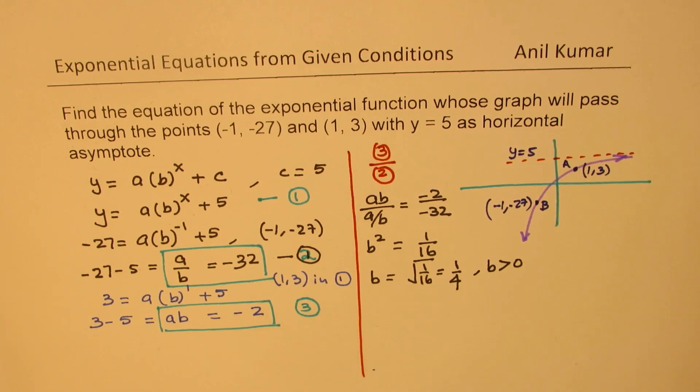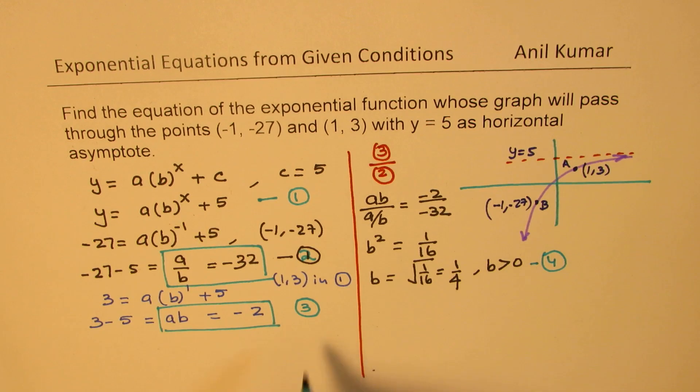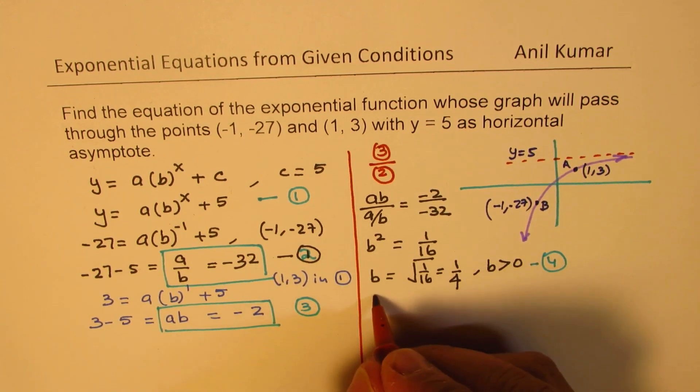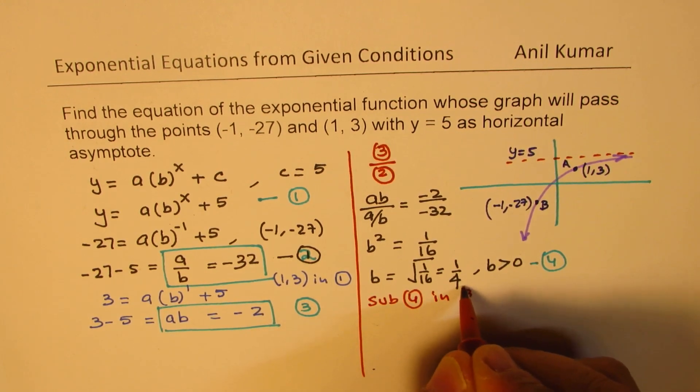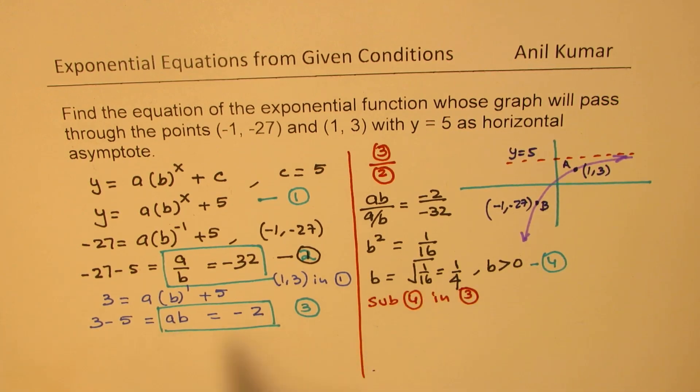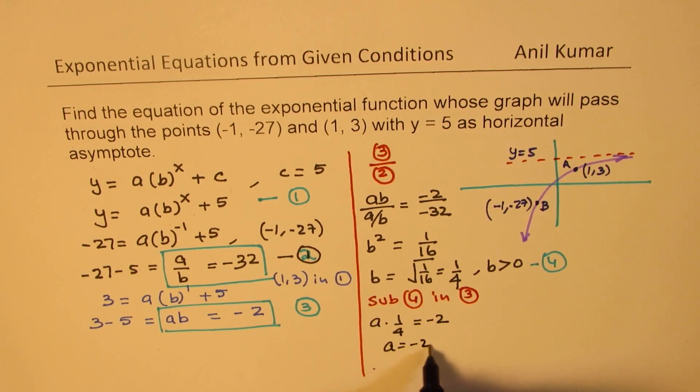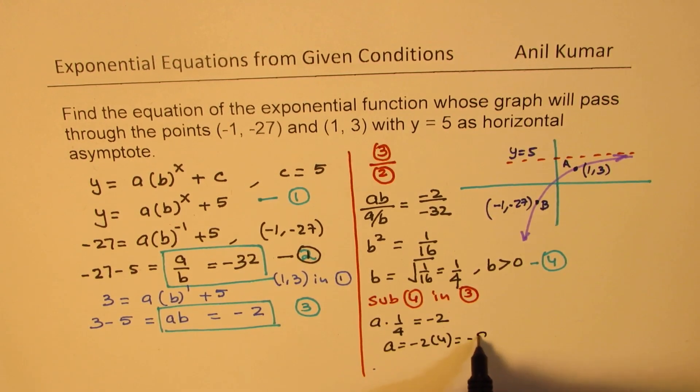Once we know what b is, let's call this our equation number 4. We can substitute this in equation 3. So b is 1/4, we get a × (1/4) = -2. So a = -2 × 4, which is -8.